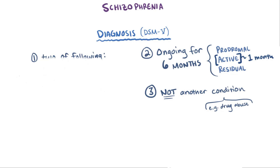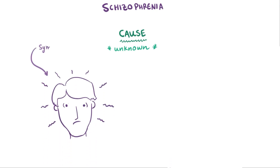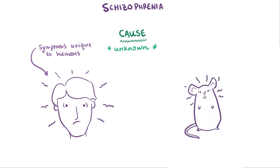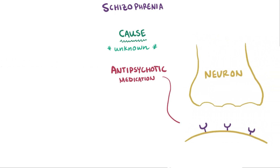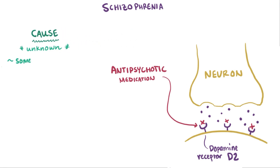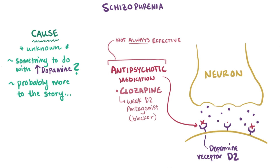What causes schizophrenia? Well, we don't really know, since the signs and symptoms of schizophrenia seem to be pretty unique to humans, or at least they're hard to notice in animal models like mice or rats. One clue is that the majority of antipsychotic medications that improve schizophrenia symptoms block the dopamine receptor D2, which reduces dopamine levels in neurons. This suggests that maybe schizophrenia has something to do with increased levels of dopamine. These medications, though, are neither universally nor completely effective and don't work for everyone with schizophrenia. Interestingly, one of the most effective antipsychotic drugs, clozapine, is a weak D2 antagonist, suggesting that other neurotransmitter systems like norepinephrine, serotonin, and GABA are involved.